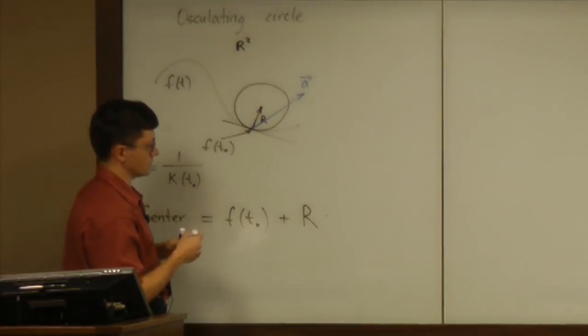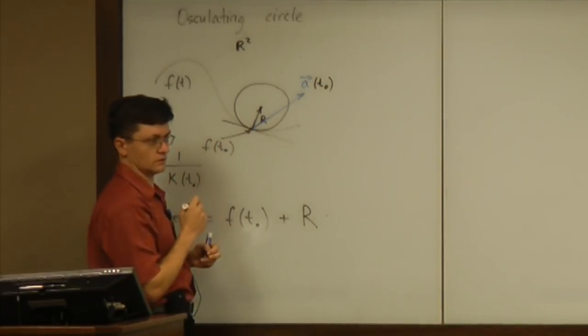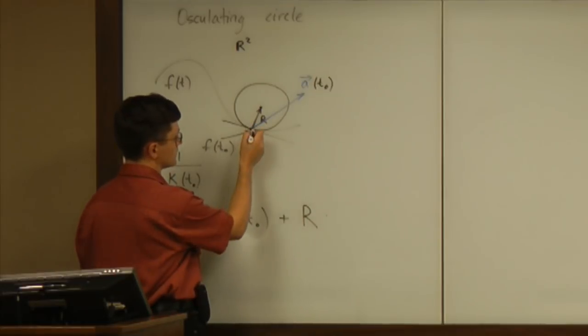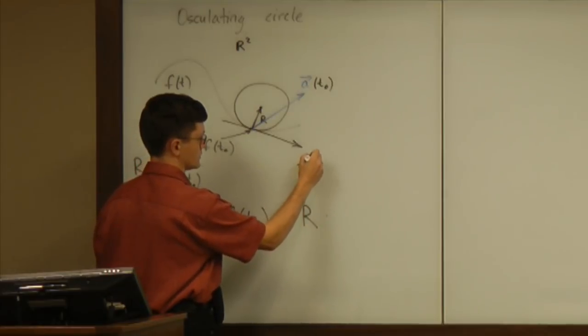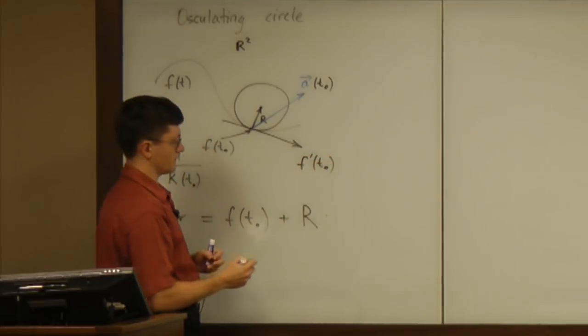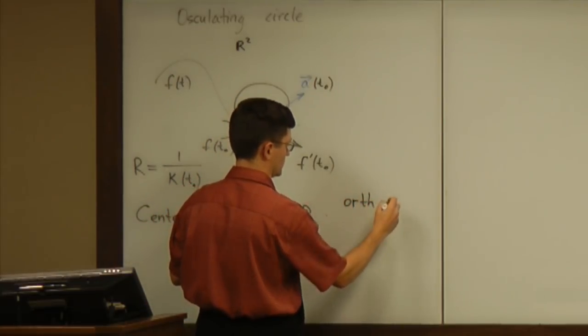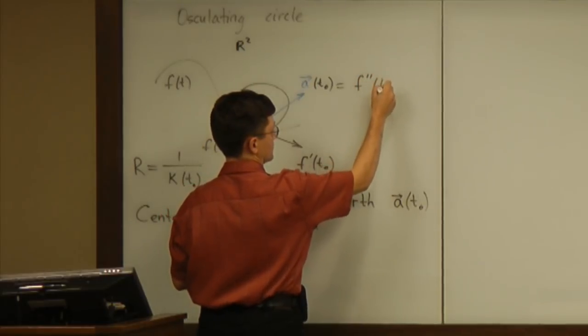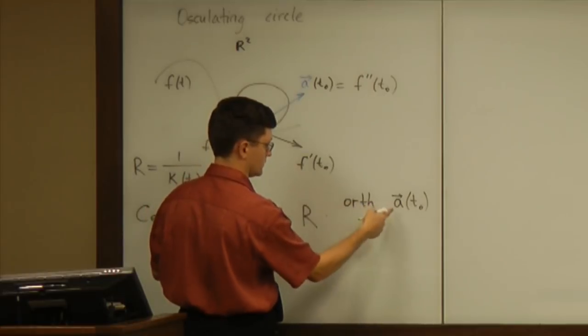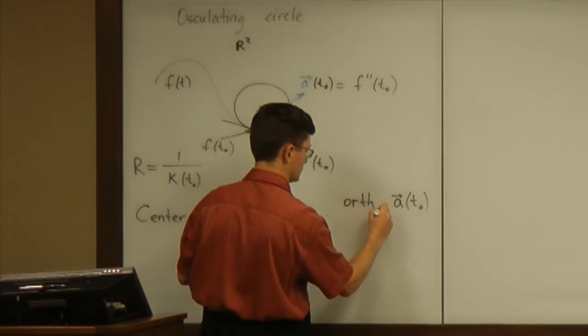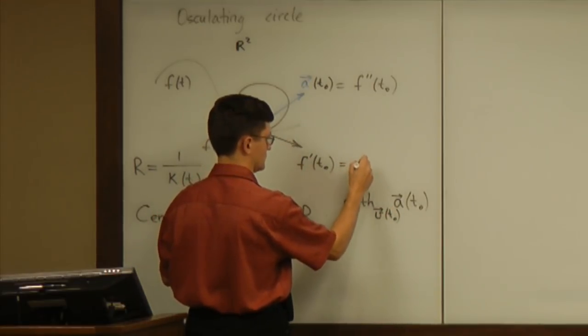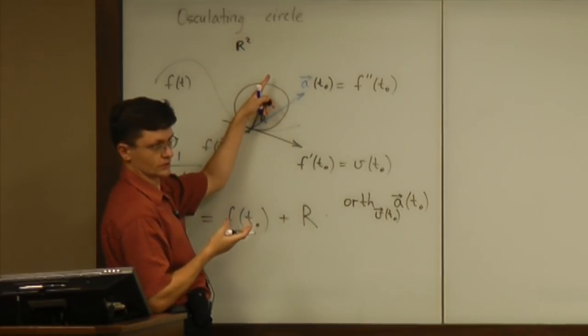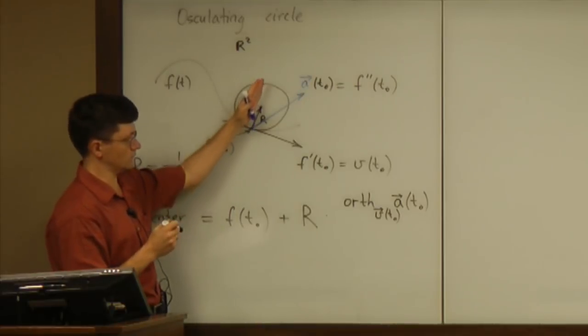So what you can do is you can think about that acceleration vector at the time t0, and then take orthogonal component of that vector with respect to the velocity. Because you already have this velocity f' of t0. So you make a vector orthogonal component of acceleration at t0. Well, acceleration is effectively the second derivative as a vector. Orthogonal component of that with respect to the velocity, and that is the first derivative. So that is going to be a vector in the right direction. And that will determine this way or that way.